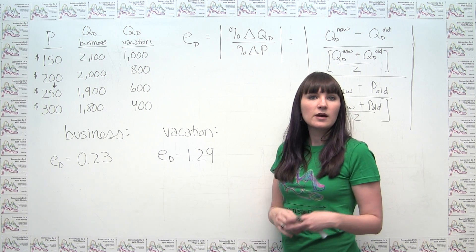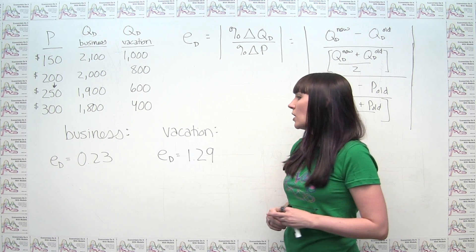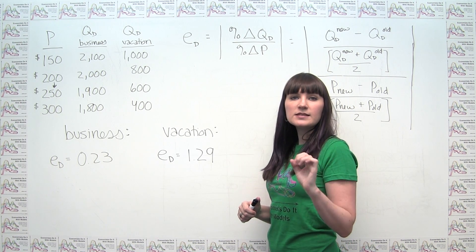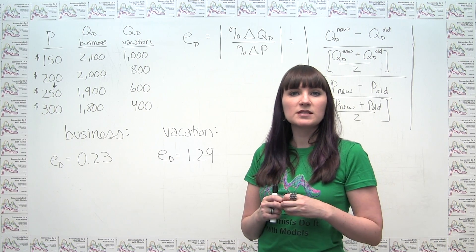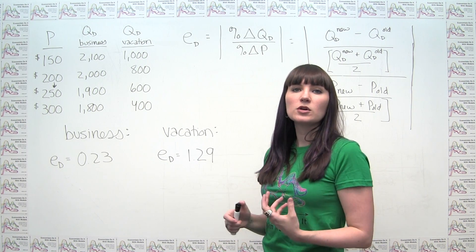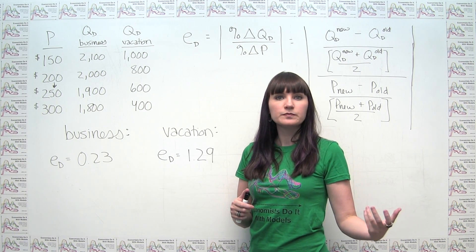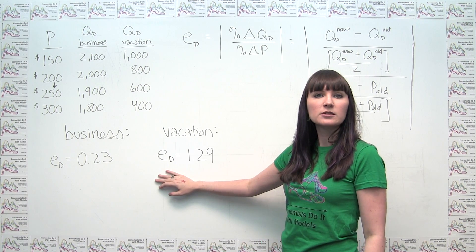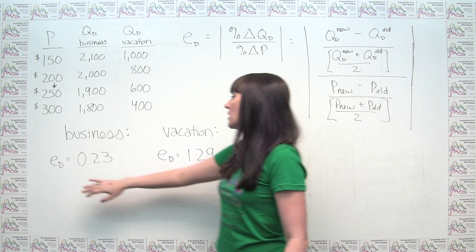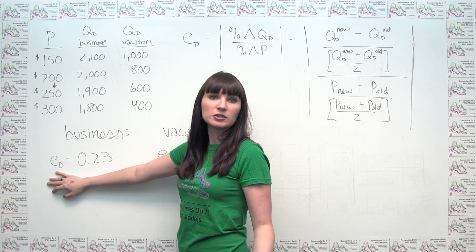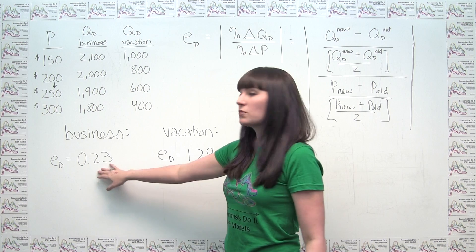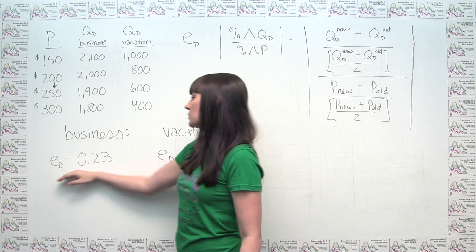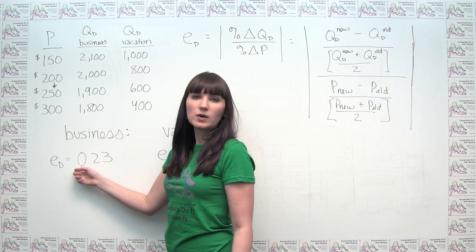We could also think about another determinant of elasticity: customers tend to be more price sensitive with goods that are a larger share of their budget. The vacation may be a larger share of the vacationer's personal budget than the business trip is as a share of the company's budget. That would be consistent with what we see — larger budget share corresponds to higher elasticity, and smaller budget share corresponds to lower elasticity.